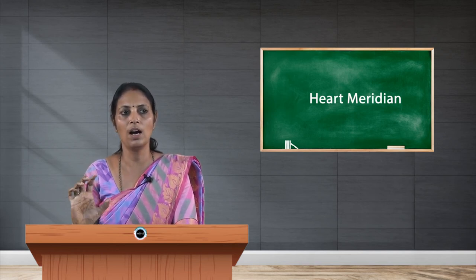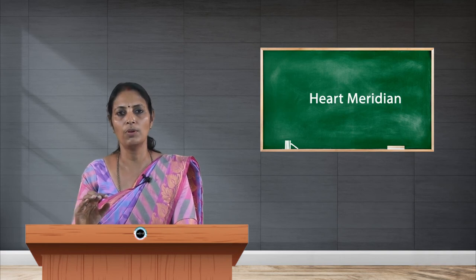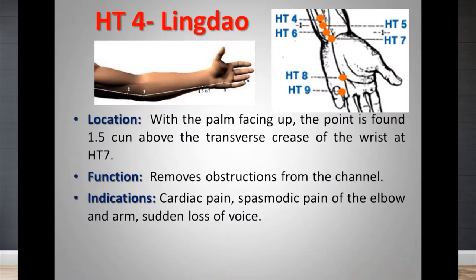Next is Heart 4, located 1.5 cun proximal to the medial end of the wrist crease. The indication as a local point is any painful condition of the forearm, or in case of rheumatoid arthritis. Needling technique: 0.5 to 1 cun straight.